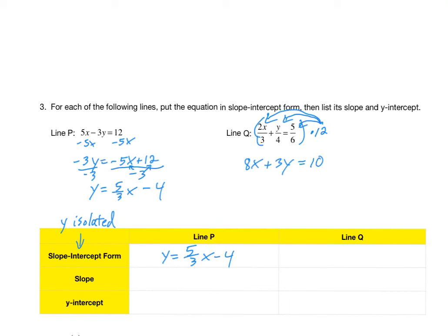So now, this equation looks very similar to how line P started. So we've got to rewrite this so that Y is totally isolated. But at least now it doesn't have any fractions. First move would be to subtract 8X from both sides, giving us 3Y equals negative 8X plus 10. And then, to fully get Y isolated, we need to divide both sides by 3, giving us Y equals negative 8 thirds X plus 10 thirds. This is the slope intercept form of line Q.